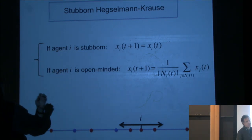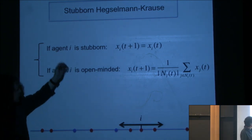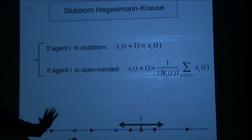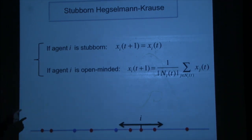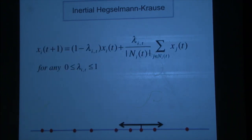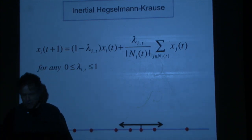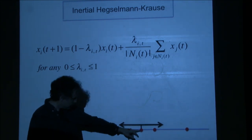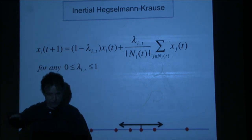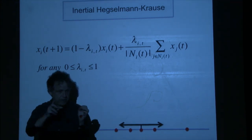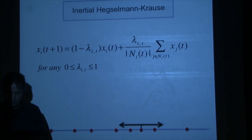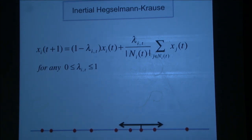What if we change the model to make it a tiny bit more complicated? Suppose there are stubborn agents who never move. We considered something more general: the old model says you have to move to the mass center, wherever it is. Let's relax this and say you have to move anywhere between your current position and the mass center. I don't force you to move all the way — you're given a little interval and can move anywhere you want. This includes the case of stubborn agents as a sub-case, since they simply choose not to move.